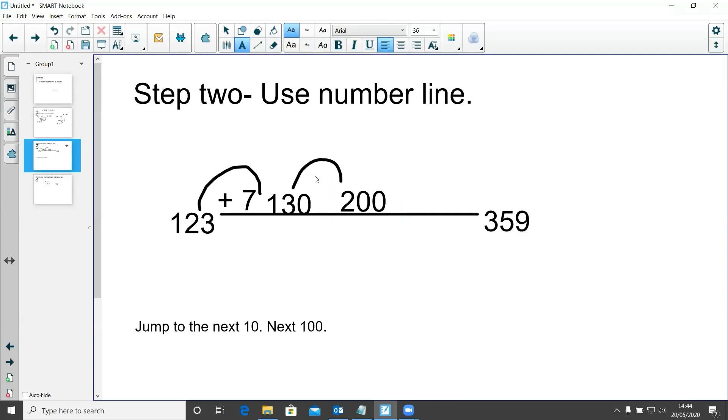And here I'm going to write I have jumped 70, because from 130 to 200 I have jumped up 70. I'm then going to hop to the hundreds number of where I am going to, my final number, the number that I am subtracting away from. So I'm going to hop to 300, and again there I have hopped 100. And then finally I can jump from 300 to 359, and I have jumped 59.